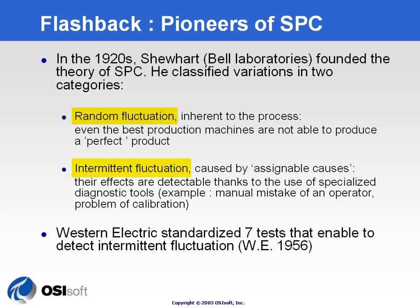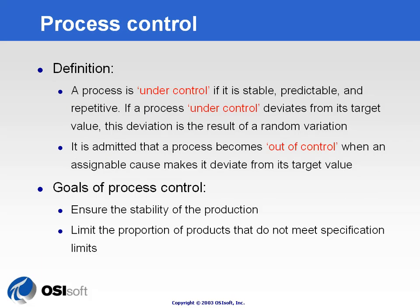Looking at the trend, he developed standardized tests that would help the user, using control limits, to differentiate between random fluctuation and intermittent fluctuation. Now let's get on the same page about some definitions around process control. We will say that a process is under control when it is stable, predictable, and repetitive.